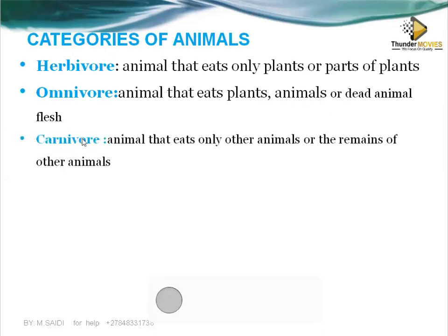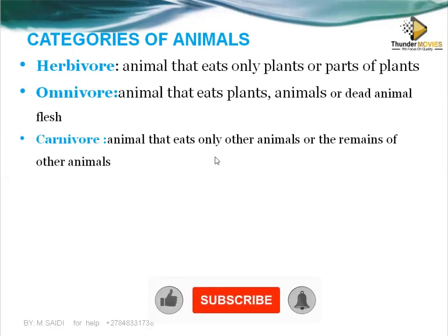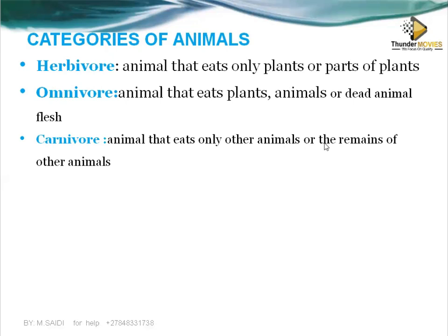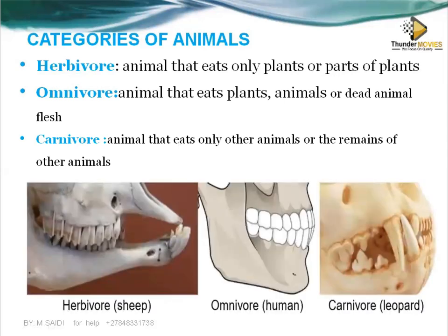The last category is carnivores — these ones feed on meat only, on animal material. They don't feed on plants. So we have those which feed strictly on plants, those which feed on animal material only, and those which feed on both plants and animals: herbivores, omnivores, and carnivores. If you look at their dental formula and tooth shape, you'll find that herbivores have teeth only on the lower jaw.